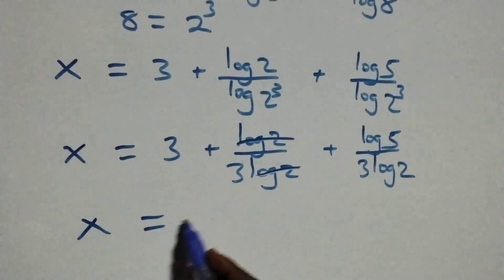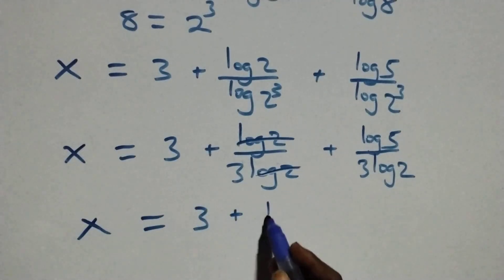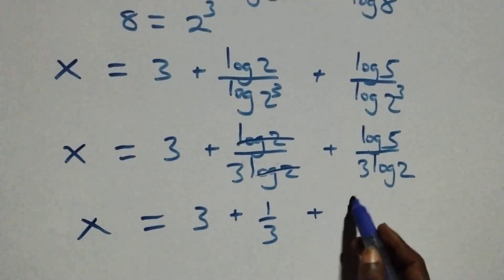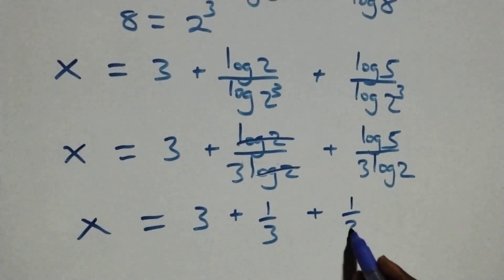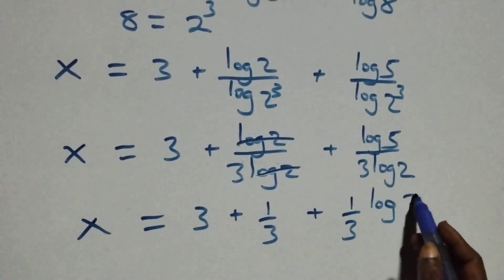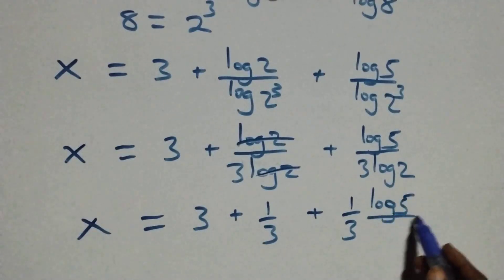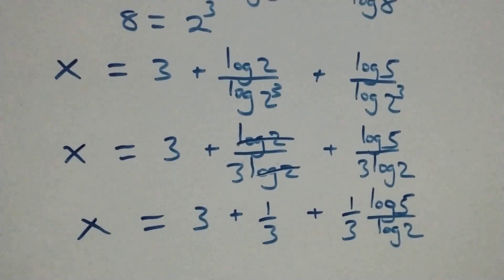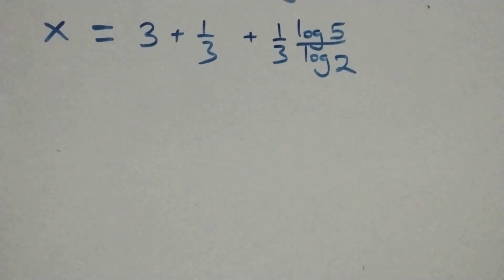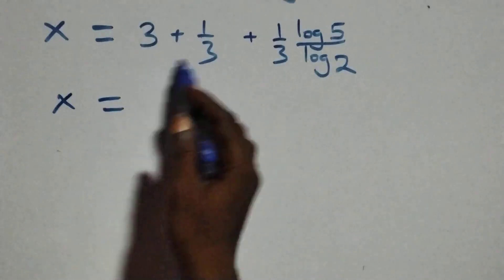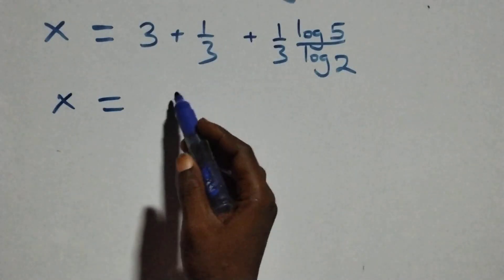Log 2 over log 2 cancels, so x equals 3 plus 1 over 3.